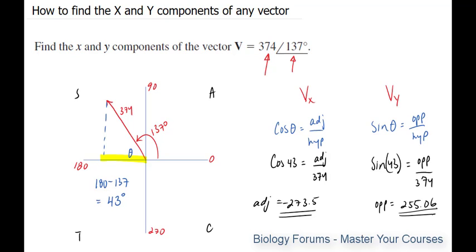Just out of curiosity, if the vector was in this quadrant, then you would have to subtract the angle from 180 and use that as your reference.